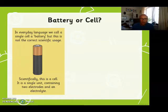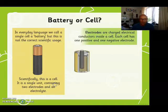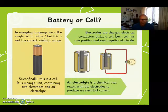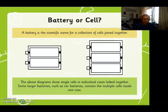Now what do we mean by battery or cell? In everyday language we call a single cell a battery, but this is not the correct scientific usage. Scientifically, one battery as we call it is a cell. It is a single unit which contains two electrodes and an electrolyte. The electrodes are charged electrical conductors inside a cell. Each cell has one positive and one negative electrode. An electrolyte is a chemical that reacts with the electrodes to produce an electric current.